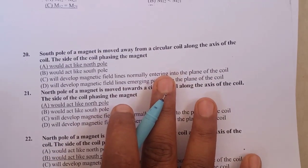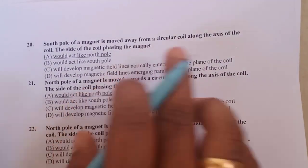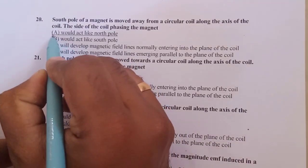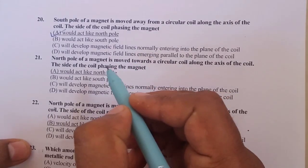In order to oppose the change that produced it, south pole of the magnet is moved away from the circular coil along the axis, and it will produce a north pole so as to attract it.